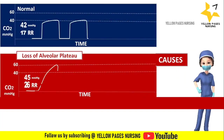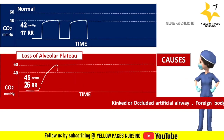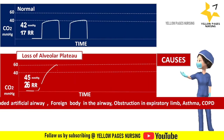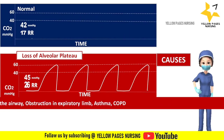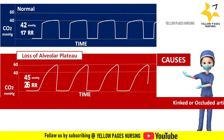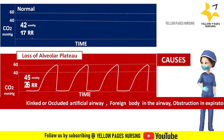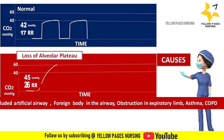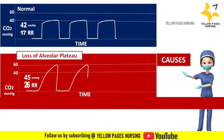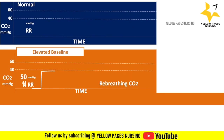Next comes the waveform with loss of alveolar plateau. In this type of waveform there is no phase 3 — no alveolar plateau — which indicates incomplete or obstructed exhalation. The waveform is specifically termed the shark's fin pattern. Causes include a kinked or occluded artificial airway, foreign body in the airway, obstruction in the expiratory limb, and conditions like asthma and COPD.